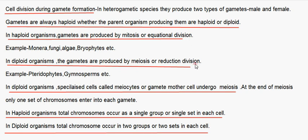In diploid organisms, gametes are produced by meiosis or reduction division — for example, pteridophytes, gymnosperms, and angiosperms. Specialized cells called meiocytes or gamete mother cells undergo meiosis, and at the end of meiosis, only one set of chromosomes enters each gamete, making the gametes haploid. In haploid organisms, chromosomes occur as a single set per cell; in diploid organisms, they occur in two sets per cell.